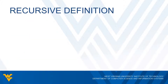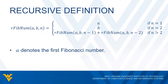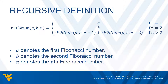We'll use the following recursive definition to compute the Nth Fibonacci number. We're going to call RFibNum and pass A, B, and N as our parameters. Here, A is the first Fibonacci number (A1), B is the second Fibonacci number (A2), and N is the Nth Fibonacci number that we want. Let's take a look at our definition.